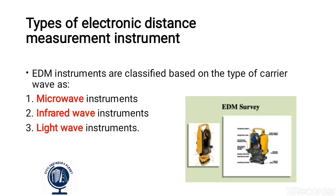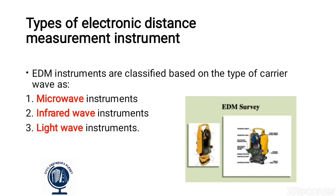Now the types of the Electronic Distance Measurement instrument — that means the types of EDM. EDM instruments are classified based on the type of carrier wave. We classify them on the basis of the waves they carry: first is the microwave instrument, second is the infrared wave instrument, and third is the light wave instrument.